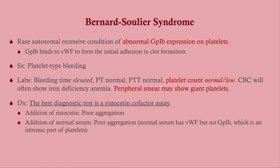Bernard-Soulier syndrome is super rare but does come up on tests. Here we have abnormal GP1b expression. Remember, Von Willebrand factor and GP1b are both important for adhesion — if you lack GP1b, you get essentially the same process as Von Willebrand's disease but lacking the other component. Symptoms are identical: platelet-type bleeding. Labs are also nearly identical, but the PTT will be normal in Bernard-Soulier (whereas it can be elevated in Von Willebrand's). One salient feature: you can see giant platelets on smear, related to abnormal megakaryocyte function.